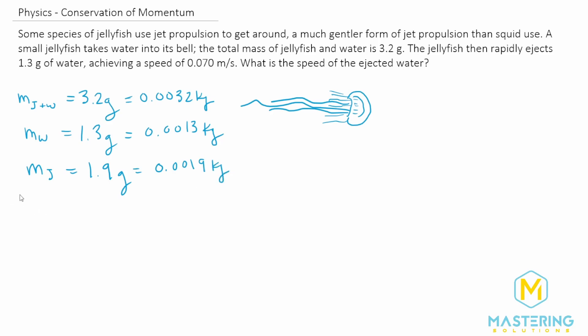And they want us to find the final speed of the water. And they tell us the velocity of the jellyfish is equal to 0.07 meters per second. So now conservation of momentum is going to be used because we know that the jellyfish and the water act on each other, but there is no outside forces acting on what we're identifying as this system here. So we know that momentum will also be conserved.